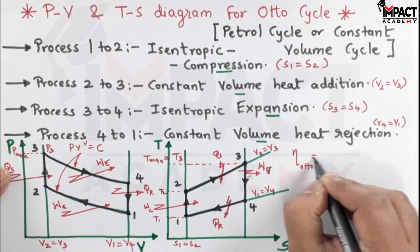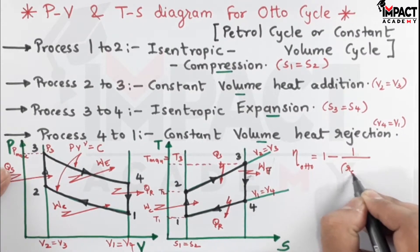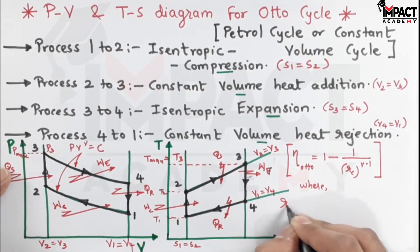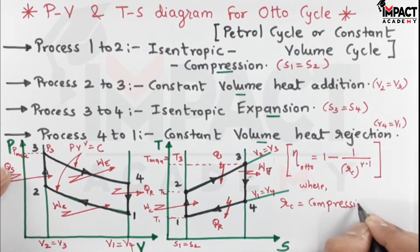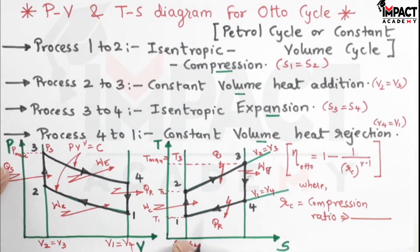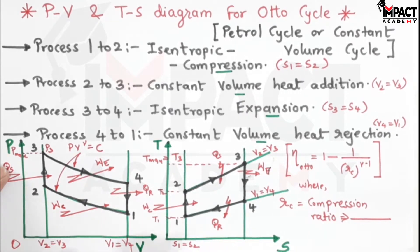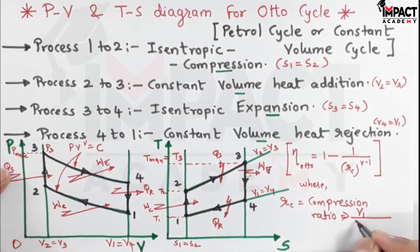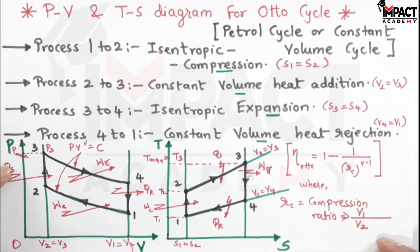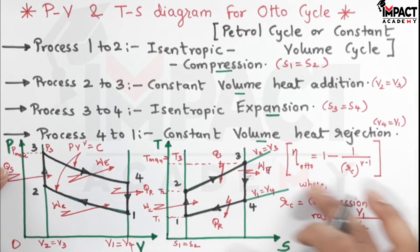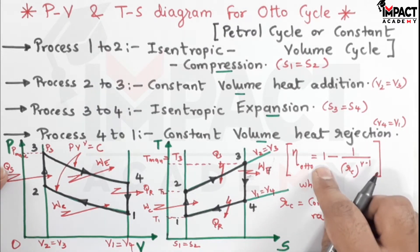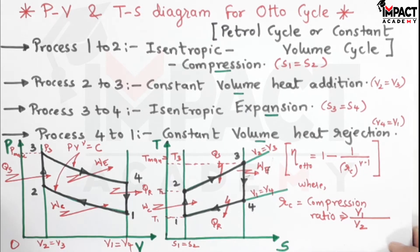The efficiency for the Otto cycle, denoted by eta, equals 1 minus 1 divided by r_c raised to gamma minus 1, where r_c is the compression ratio — given by cylinder volume to clearance volume. From the PV diagram, V1 is the cylinder volume and V2 is the clearance volume, so r_c equals V1 divided by V2. To increase the efficiency of the Otto cycle, we increase the compression ratio, which decreases the subtracted term, resulting in higher efficiency.